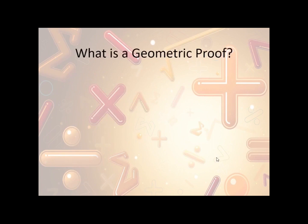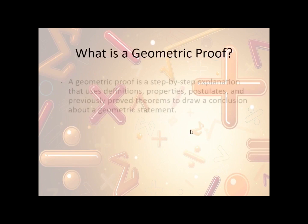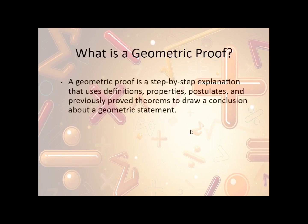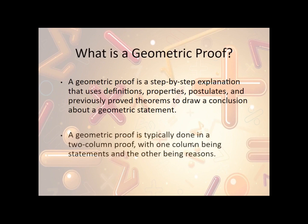Now, what is a geometric proof? A geometric proof is a step-by-step explanation that uses definitions, properties, postulates, and previously learned theorems to draw a conclusion about a geometric statement. A geometric proof is typically done in a two-column proof with one column being the statements and the other being the reasons.